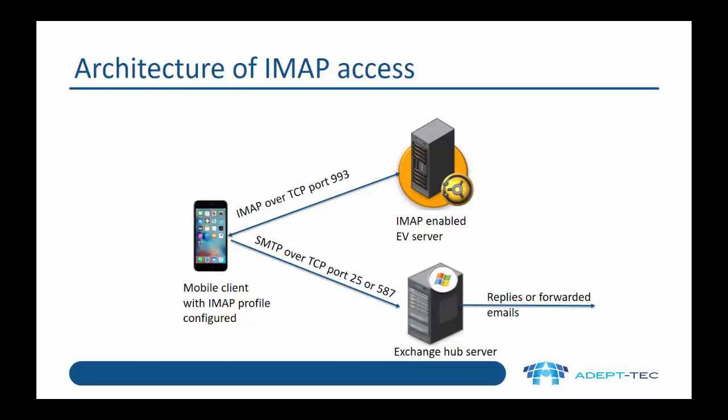Providing this access internally is pretty straightforward, but providing it externally requires extra levels of security. For instance, you would want to publish the IMAP-enabled EV server using a reverse proxy server. And you need to be very careful about publishing the Exchange hub server to allow relay from the outside world.